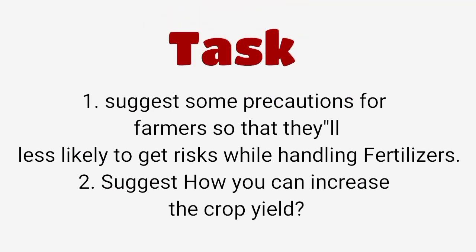Today's task is to suggest some precautions for farmers so they are less likely to get risks while handling fertilizers, and to suggest how you can increase the crop yield — that is, how to grow more and more of a crop. For example, if you are cultivating wheat, how can you get more and more wheat? And for the first part, suggest how farmers can reduce risk when spreading fertilizers, such as not spreading with bare hands.